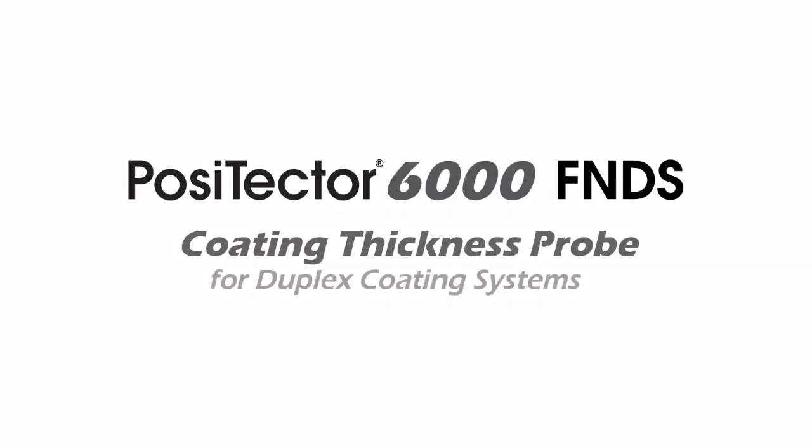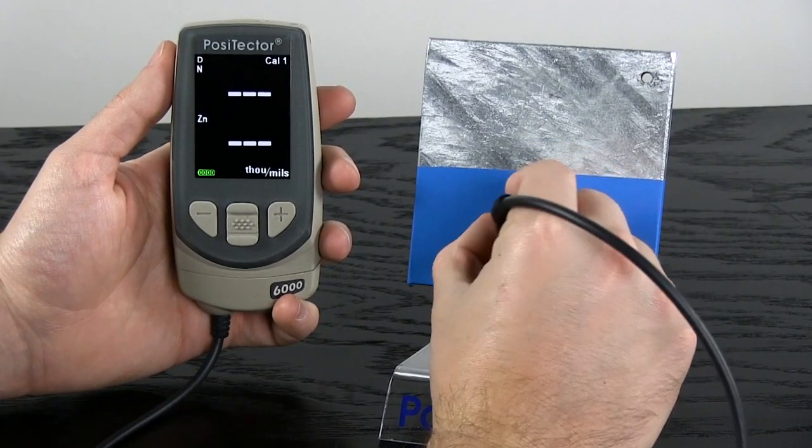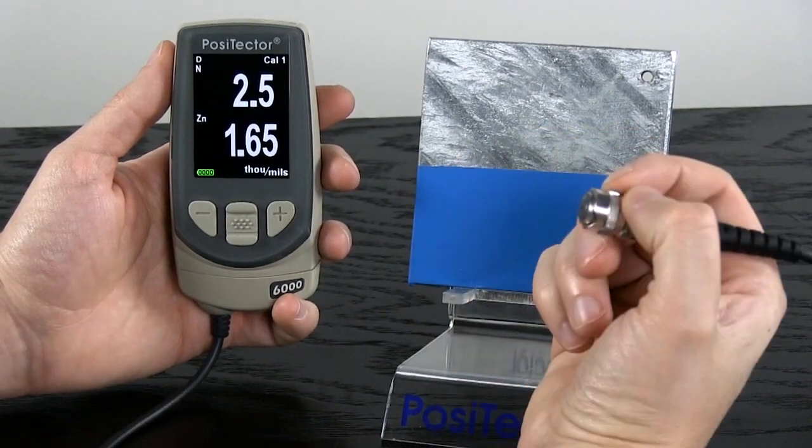The Positector 6000 FNDS probe from Defelsco measures the individual thicknesses of both the paint and the zinc in a duplex coating system with a single probe reading.